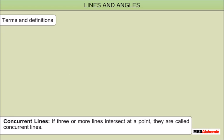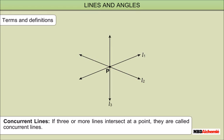Concurrent Lines: If three or more lines intersect at a point, they are called Concurrent Lines. For example, in the figure, lines L1, L2, and L3 are concurrent as they intersect at point P.